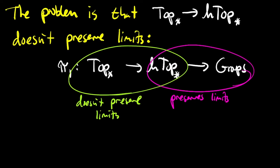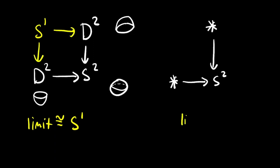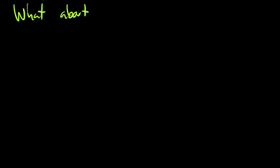Let me give you an example. Consider the diagram that maps the disk into the sphere as the upper hemisphere and as the lower hemisphere. This diagram is homotopy equivalent to the map that sends a point to the base point of the sphere and another point to the base point of the sphere, because the disk is homotopy equivalent to the point. But now let's take the limit of these two diagrams in the category of topological spaces. In this case, it's the pullback. The pullback of the diagram with the disks is the circle, and the pullback of the diagram with the points is just the point. And so two diagrams that are homotopy equivalent have limits that are not homotopy equivalent. And so you see, homotopy does not behave very well with limits.